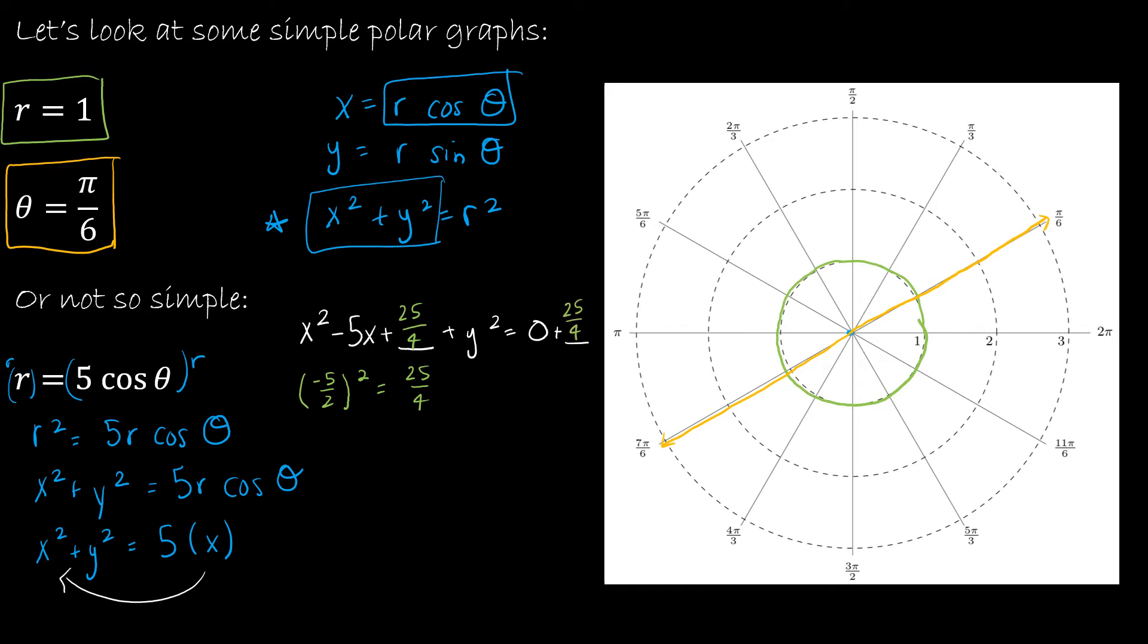So my equation is that this entire expression can now be written as x minus 5 halves quantity squared plus y squared is equal to 25 fourths. And this is just the equation of a circle. So if this is a circle, the circle has a center of positive 5 halves comma zero, and has a radius of the square root of 25 fourths, which is 5 halves.